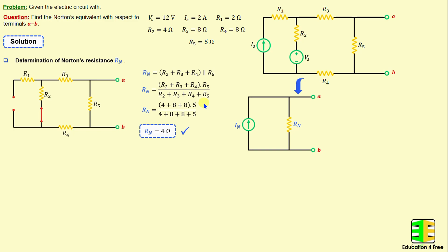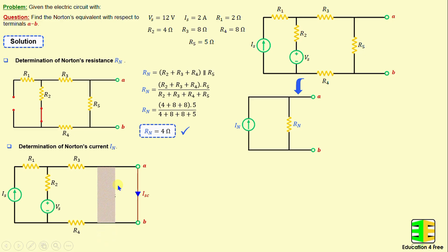After finishing the determination of the Norton's resistance, we proceed to calculate the Norton's current IN. The Norton current is basically the short circuit current calculated between terminals A and B. The resistance R5 is short-circuited, meaning no current flows through the resistor R5.